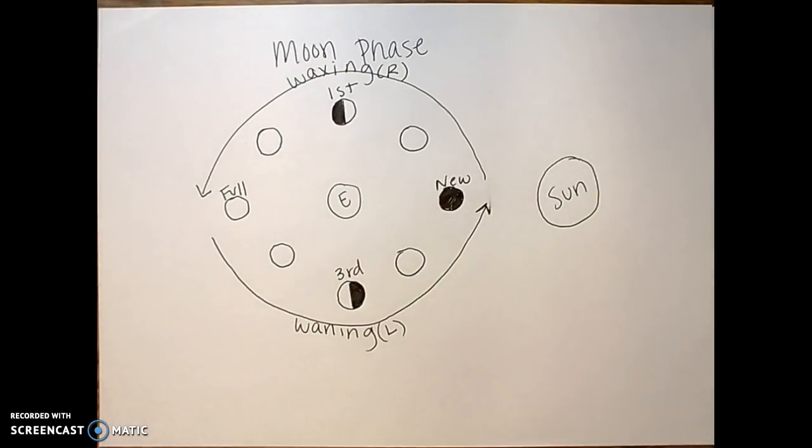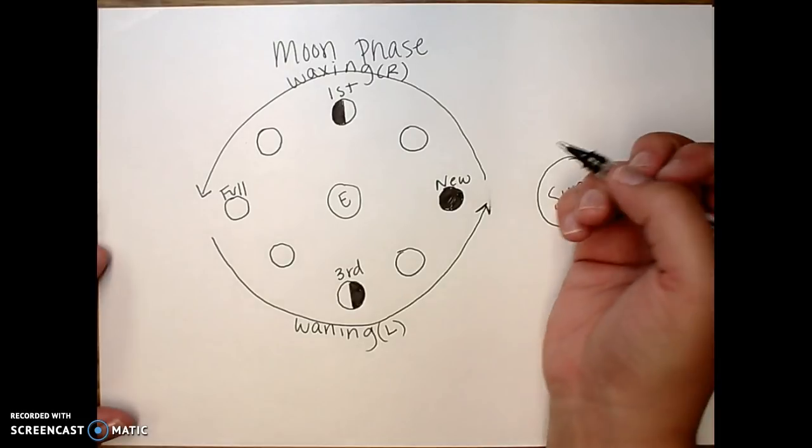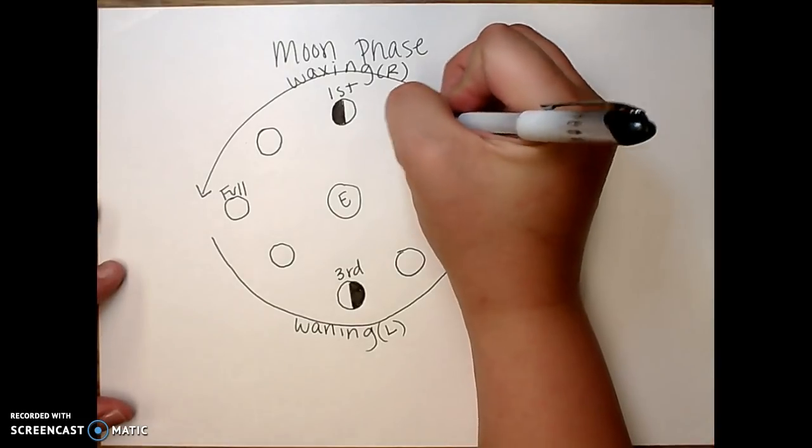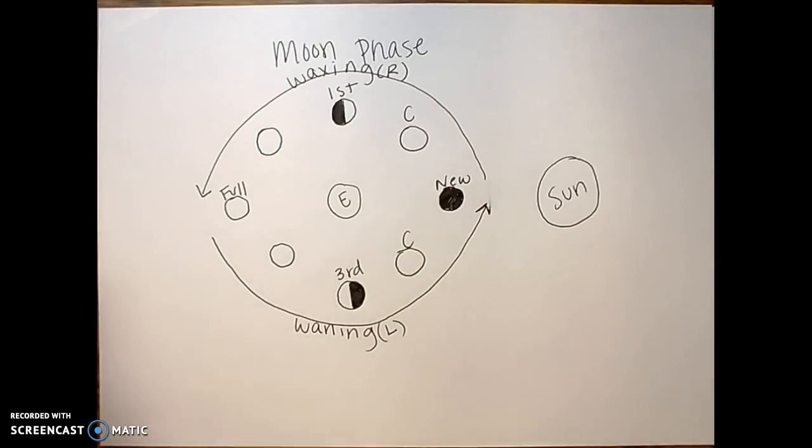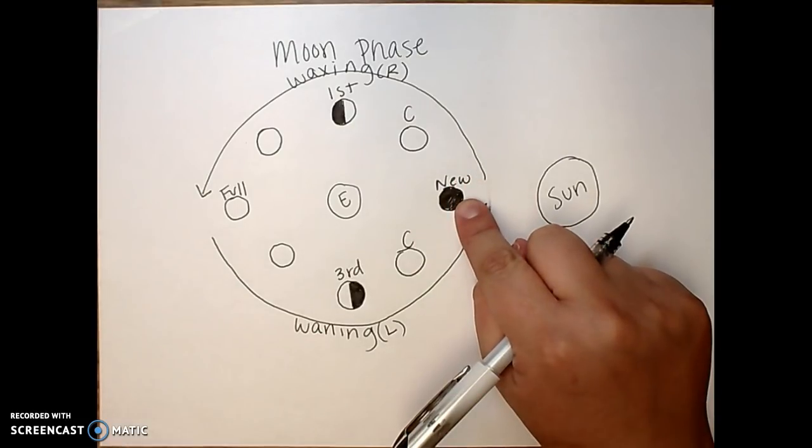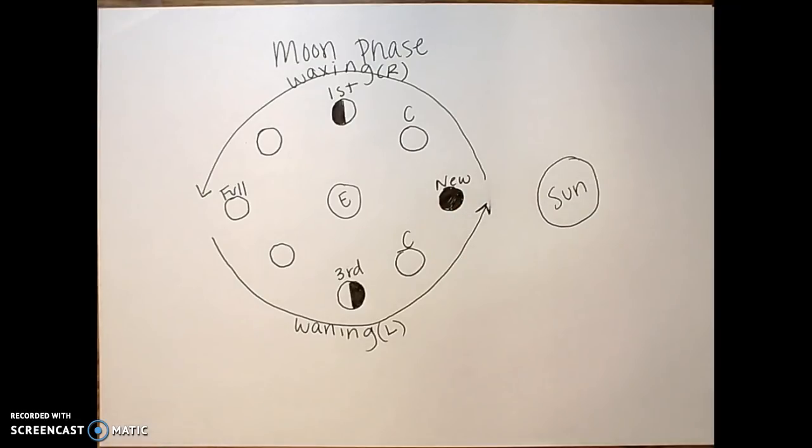So now let's fill in our in-between, our transition phases. So the first one I'm going to do are my crescents. Now because my crescents don't have very much light, they're going to be nearest the new moon. They're less than half. So you need to think, because they're mostly dark, they're going to be nearest to the all dark phase.